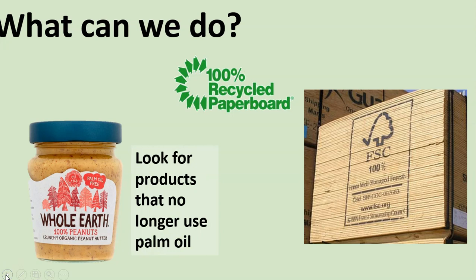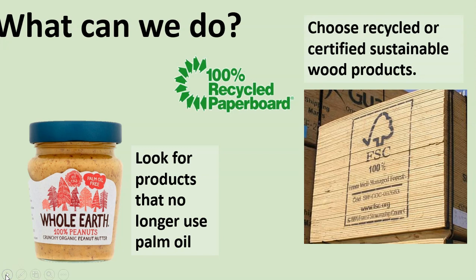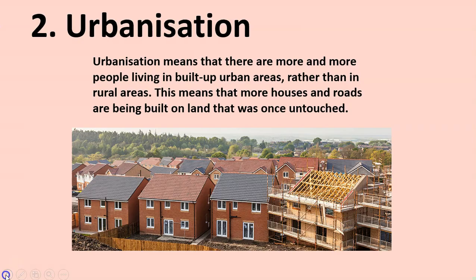There are lots of things you can do to help though. One of the things you can do is look for products that no longer use palm oil. If we stop using products with palm oil, they will stop producing palm oil and that will help the environment. Also choose recycled or sustainable wood products, which means we don't have to keep cutting down the trees in the forest.